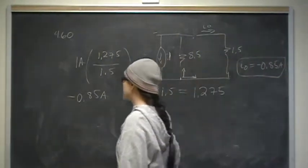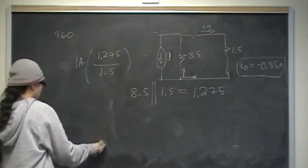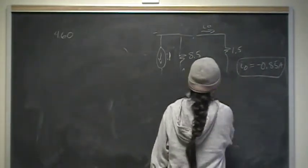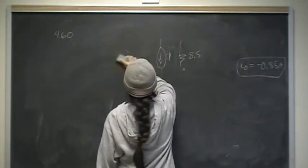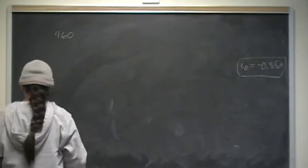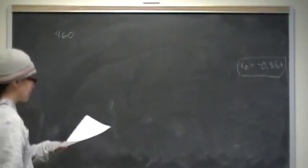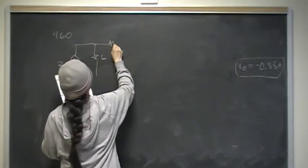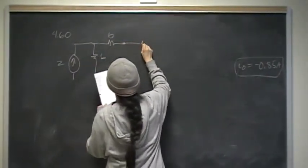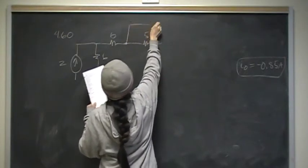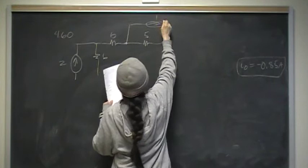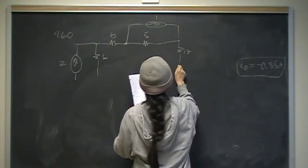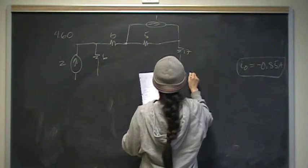That is part A — finding I-naught by source transformation. Now for part B, we verify using the mesh method. I personally prefer mesh and node voltage over source transformation, and definitely over superposition, so this is the method I would have used to begin with. Here is the original circuit.